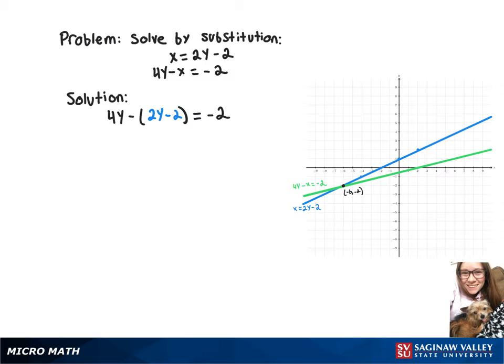Now we can distribute that negative, giving us 4y minus 2y plus 2 equals negative 2.